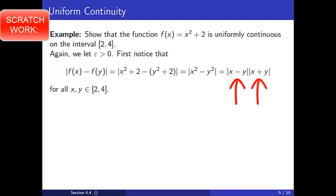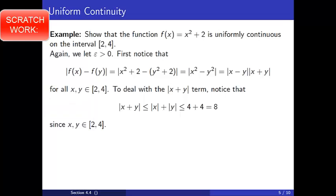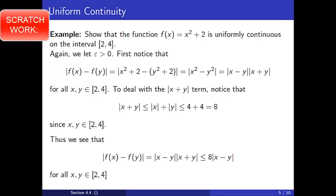Here we see two variable factors. We have control over the first term, |x − y|, due to the fact that we will assume this quantity is less than a delta to be specified. To deal with the factor |x + y|, we use the triangle inequality. Notice that |x + y| ≤ |x| + |y| ≤ 4 + 4, since both x and y are in the interval [2, 4]. Therefore |x + y| ≤ 8 for all x and y in [2, 4]. Thus the distance between f(x) and f(y) is less than 8 times |x − y|, and hence we will choose delta equal to epsilon divided by 8.